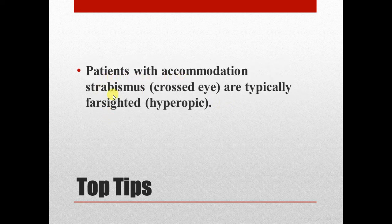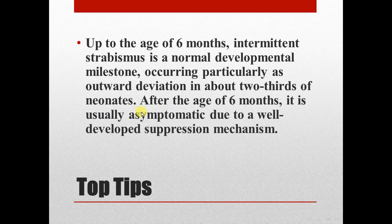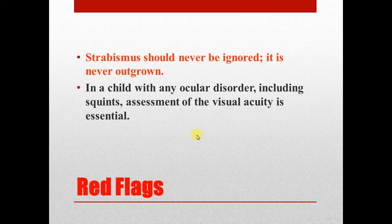Patients with accommodative strabismus are typically far-sighted (hyperopic). Up to the age of six months, intermittent strabismus is a normal developmental milestone, occurring particularly as outward deviation in about two-thirds of newborns. After the age of six months, it is usually asymptomatic due to a well-developed suppression mechanism.